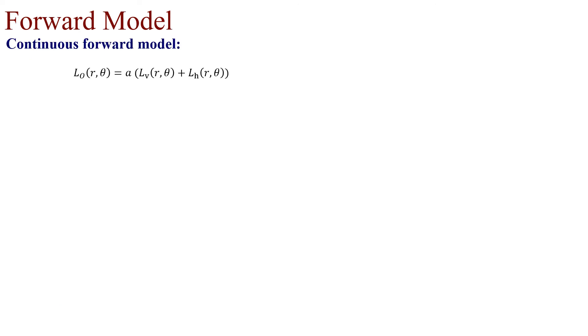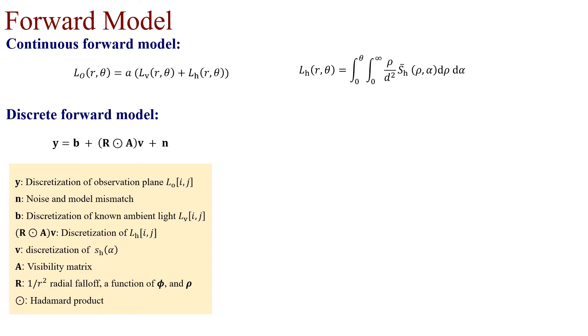Now that we have a continuous forward model, where the light from the hidden side is defined in terms of our unknown 2D hidden scene, using this model we form a discrete forward model. In addition to assuming that SH bar is separable in range and angle, we further assume that the hidden scene is comprised of Q unknown hidden targets.